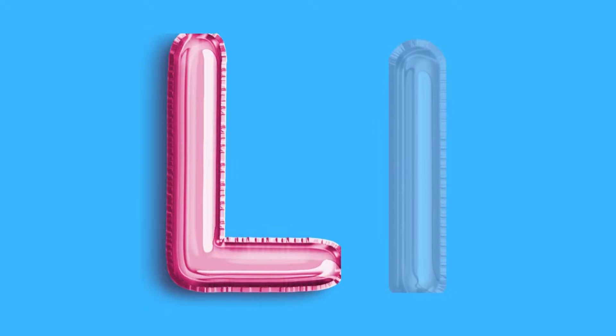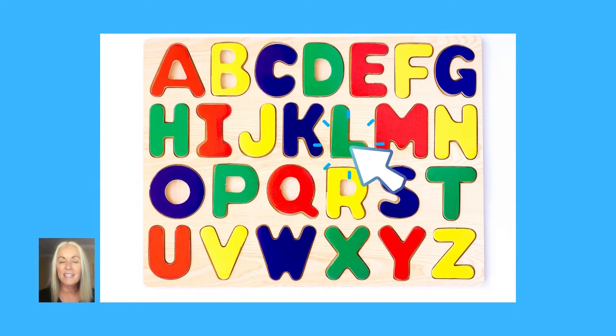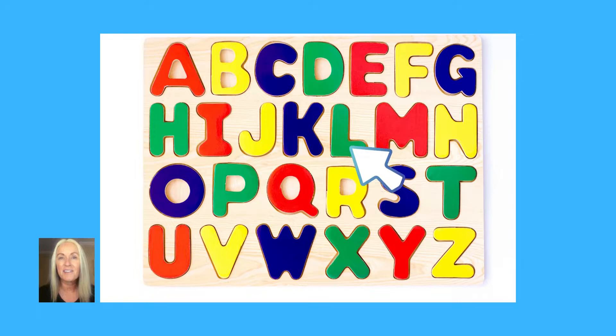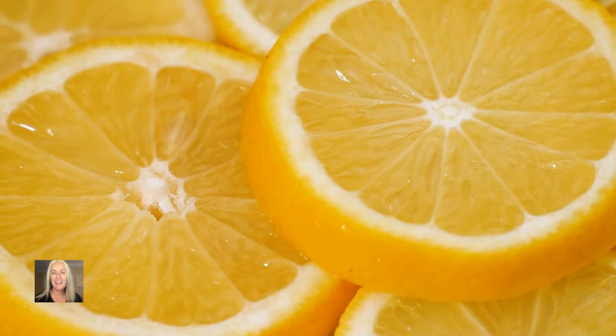That sound you hear at the beginning of Lucy, lion, loves, lollipops is this letter — the letter L. This is the uppercase letter L and the lowercase letter L, and they both sound like this: L. Here's our alphabet again. Remember, there are 26 letters in the alphabet. Letter L is right there, kind of in the middle of the alphabet, and it says L. Lollipop begins with L. Lion begins with L. Lemon begins with L. Lip begins with L.